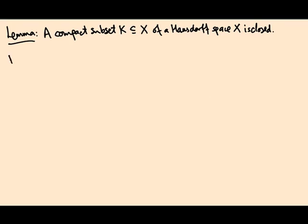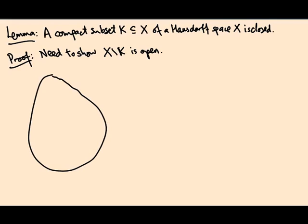So what do we have to prove? We need to show that the complement is open. That's what it means for k to be a closed set. So let's suppose this is x, this is k. Let's pick a point y that's not in k. If there is no such point, if x equals k, then the complement is empty so it's open, so you don't need to worry.